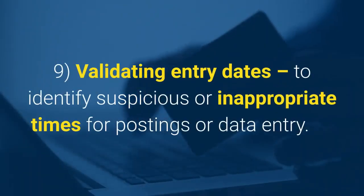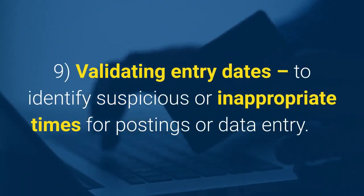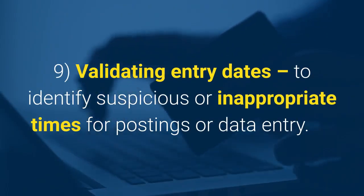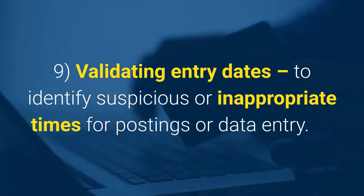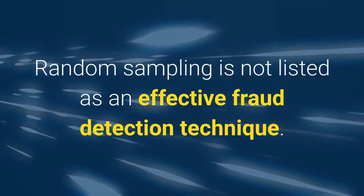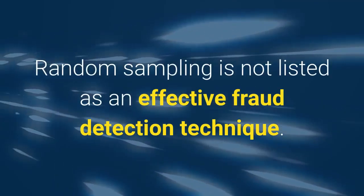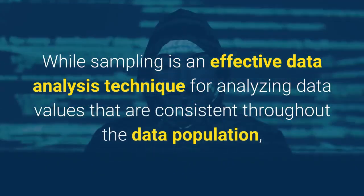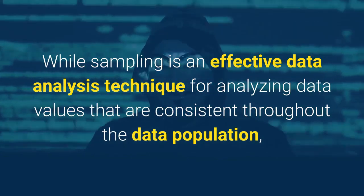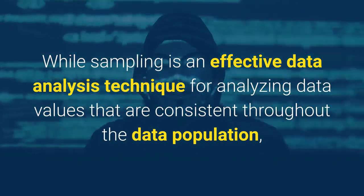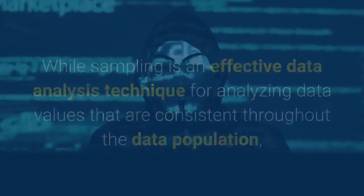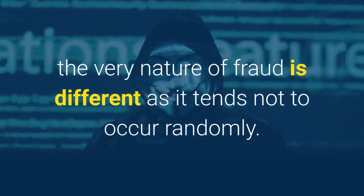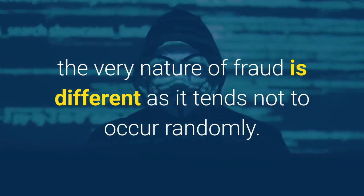Eight: summing of numeric values to identify control totals that may have been falsified. Nine: validating entry dates to identify suspicious or inappropriate times for postings or data entry. Random sampling is not listed as an effective fraud detection technique. While sampling is an effective data analysis technique for analyzing data values that are consistent throughout the data population, the very nature of fraud is different, as it tends not to occur consistently.